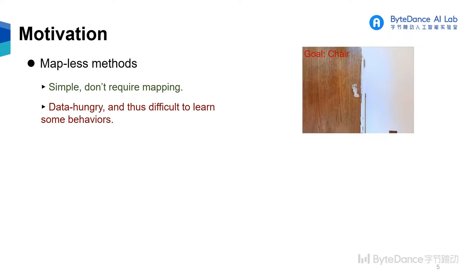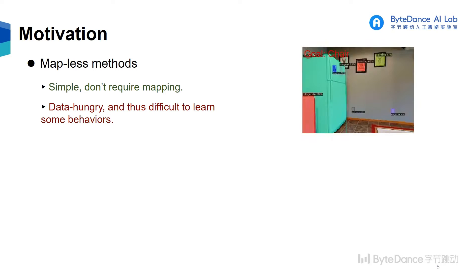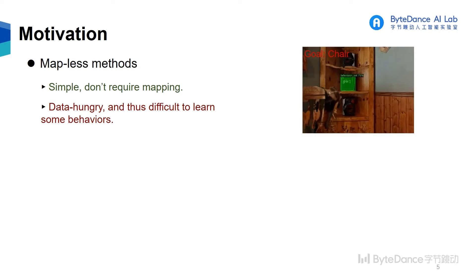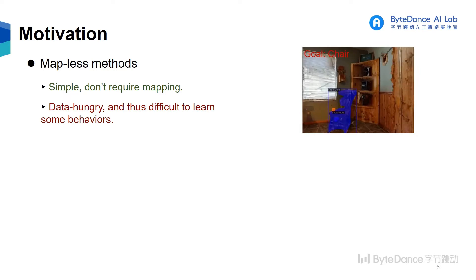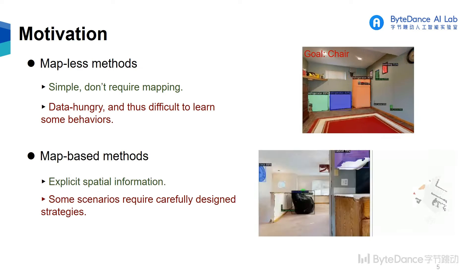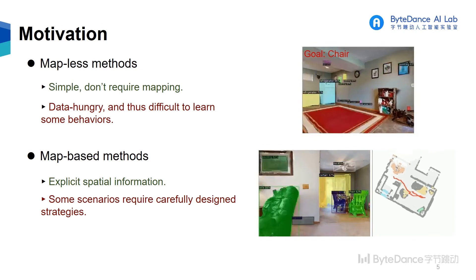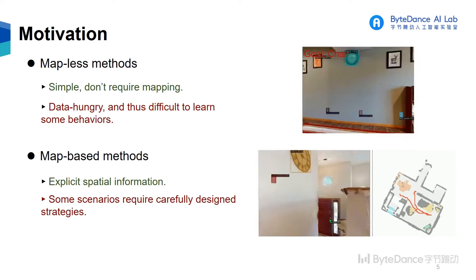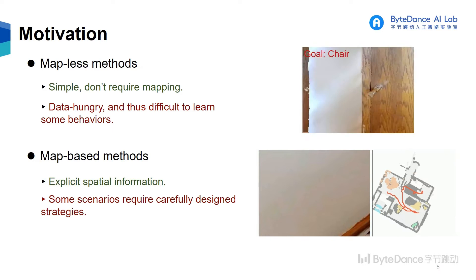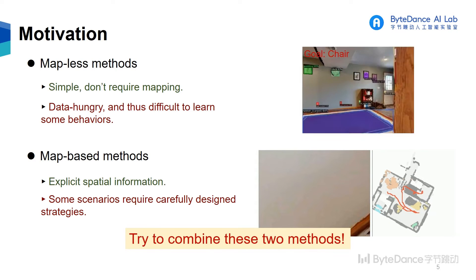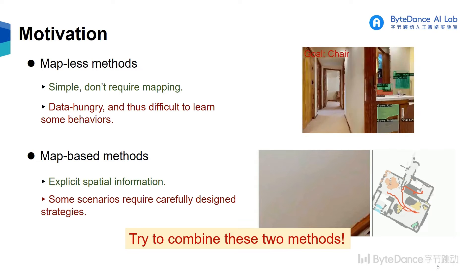We discover that most end-to-end methods are data-hungry and difficult to learn some behaviors, such as stopping at the goal location. Map-based methods contain explicit spatial information, but require carefully designed strategies under some scenarios like stairs. Therefore, we try to combine these two kinds of methods in order to achieve better performance.